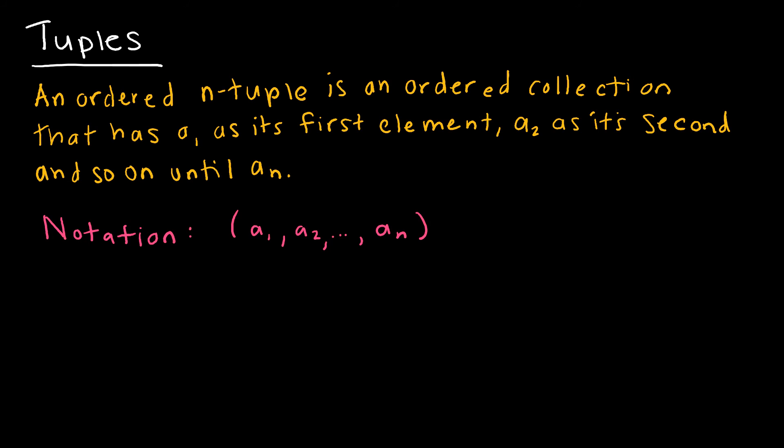So this brings us to tuples, and a tuple is important because basically it's an ordered collection that has a sub 1 as its first element, a sub 2 as its second element, etc. Obviously, the way that we would have seen this most often is in ordered pairs, so a1 comma a2, you get the idea. It's basically just two values, but the important thing here is that it's ordered, whereas when we're just looking at a normal set, we don't worry about the order. But ordered pairs, obviously, the ordered pair of 5, 2 is not the same as the ordered pair of 2, 5. Those are very different points on our Cartesian plane.